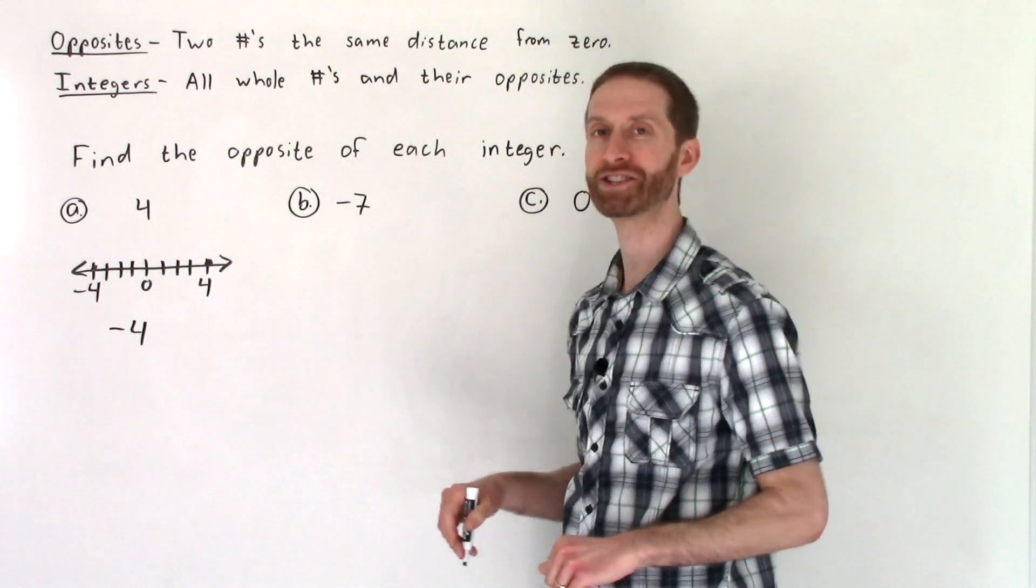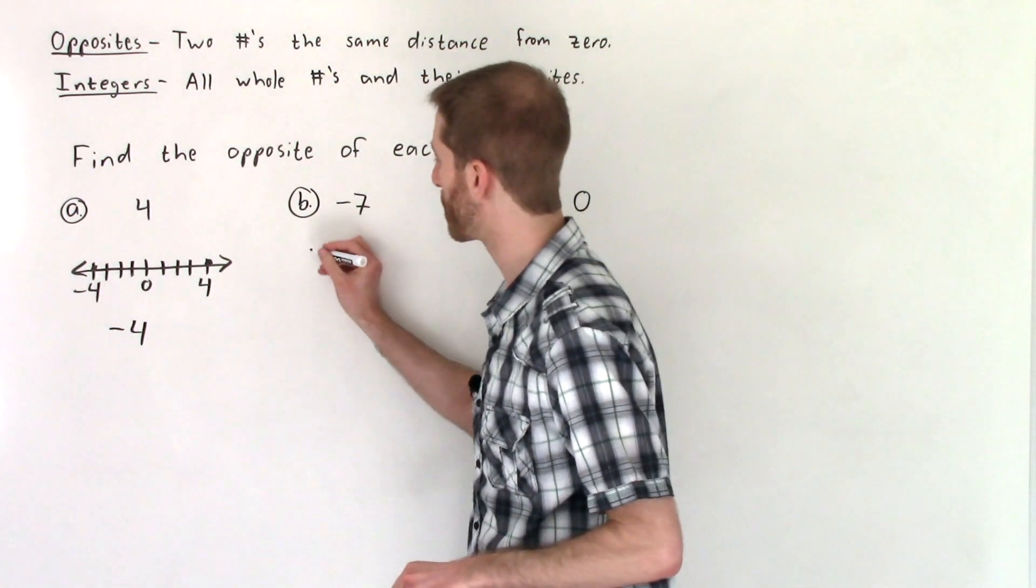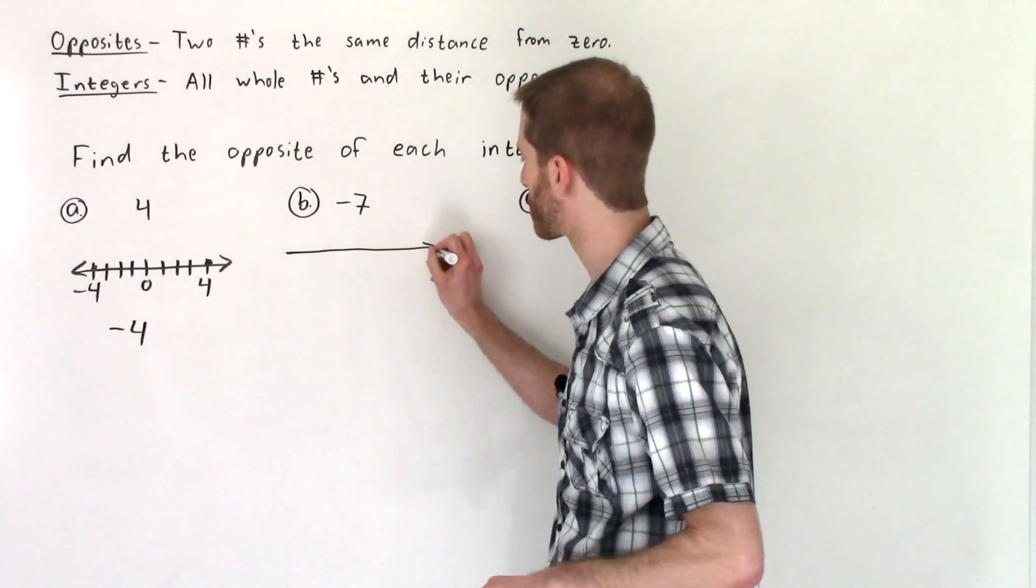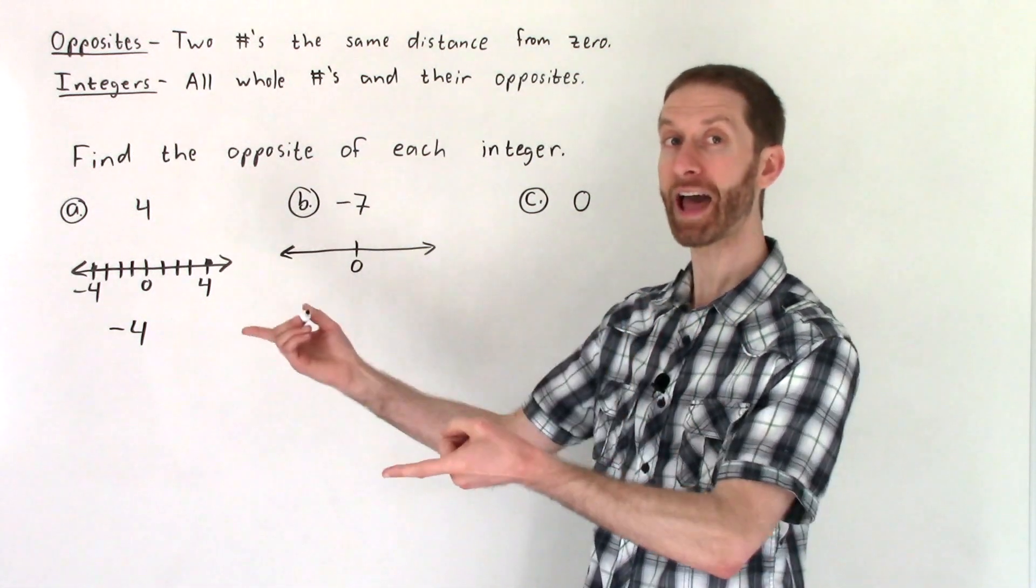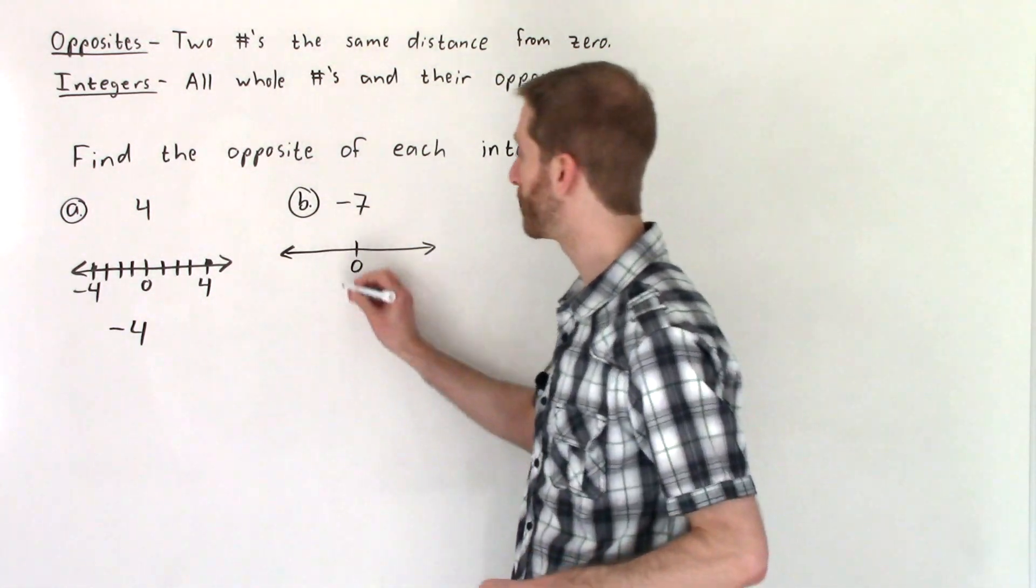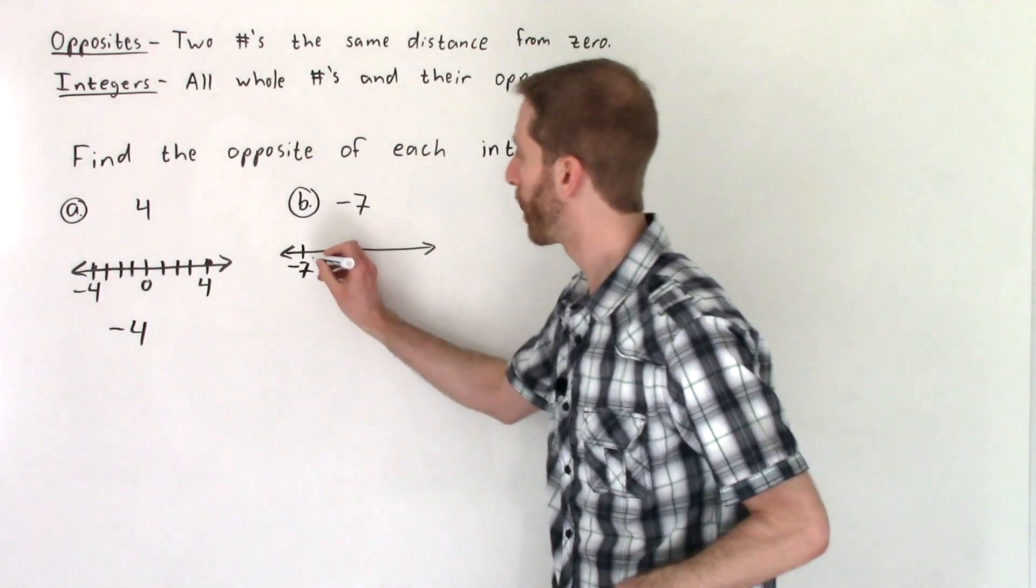That negative seven, what's the opposite of negative seven? Well, I'll do an abbreviated number line here. What I mean by that is I won't mark everything down. Negative seven is seven spots to the left of zero. So that would be over here at negative seven. We'll put a point there.